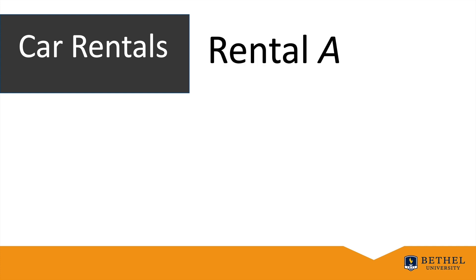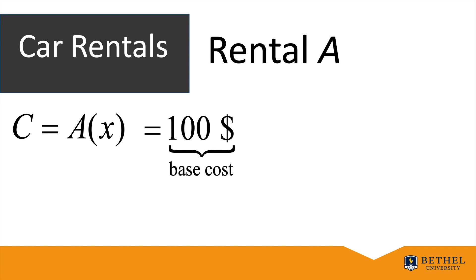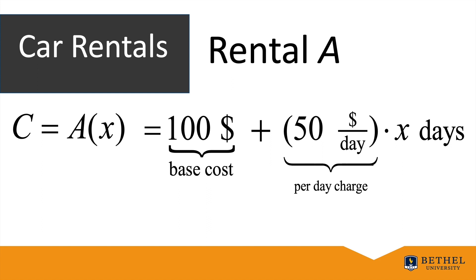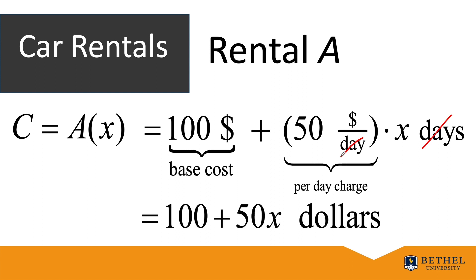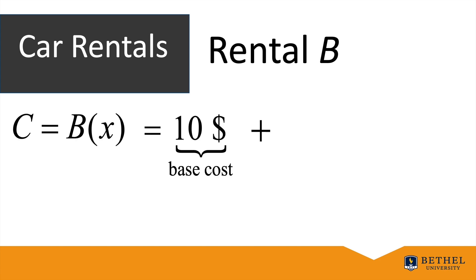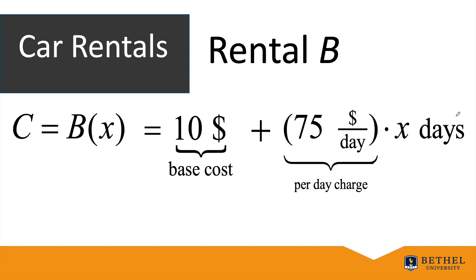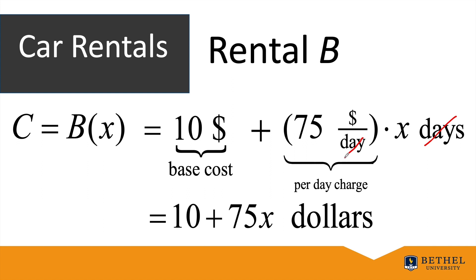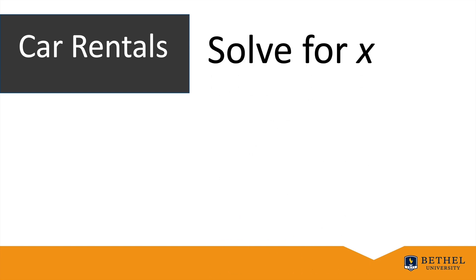Let's confirm with formulas and graphs. The cost of rental A is A(x) = 100 + 50x: the base cost of $100 plus $50 per day times x days. For rental B, the cost is B(x) = 10 + 75x: the base cost of $10 plus $75 per day times x days.